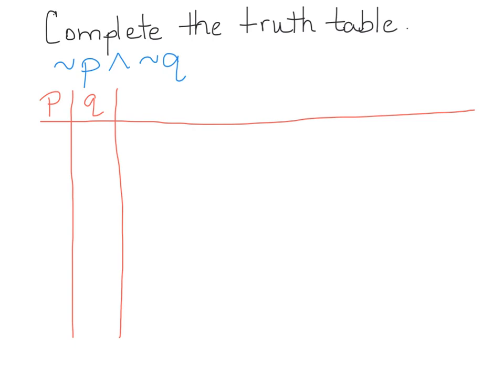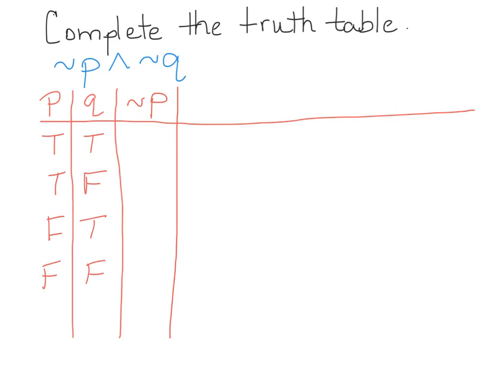Suppose you're asked to complete the truth table given the statement: Not P and Not Q. Remember, P and Q are not going to change. So you're going to have True, True, False, False for P, and True, False, True, False for Q. Notice here that we also have Not P. What does Not P mean? It means the opposite of whatever P is. Since P is True, then Not P is going to be False, False, True, True. I'm looking at the P column and taking the opposite of that.